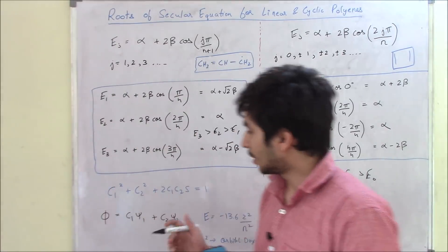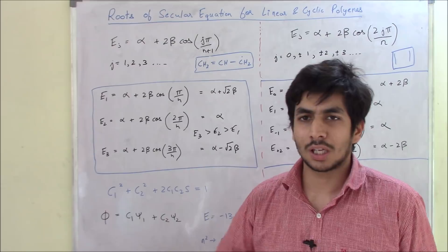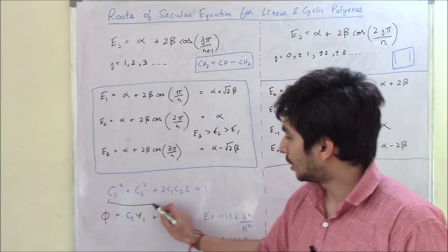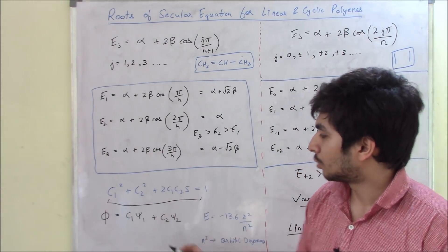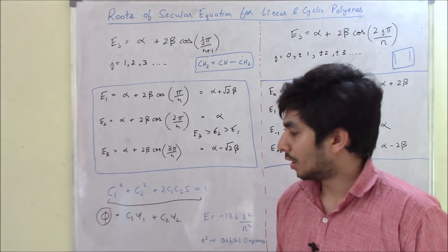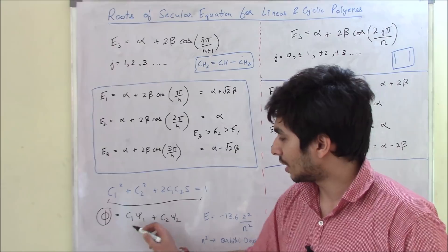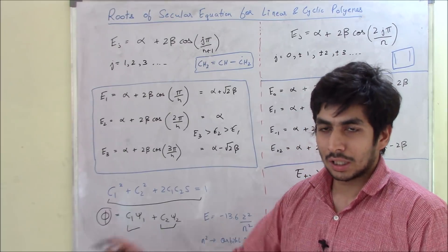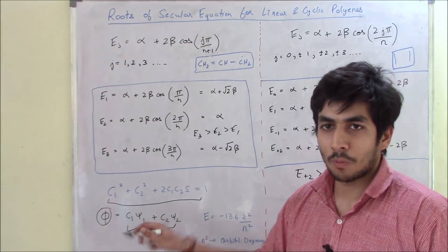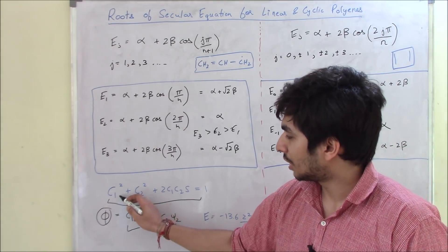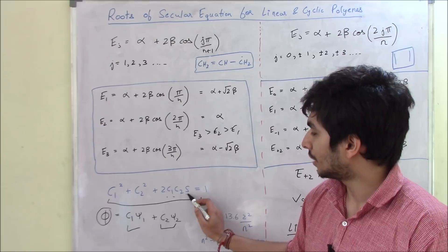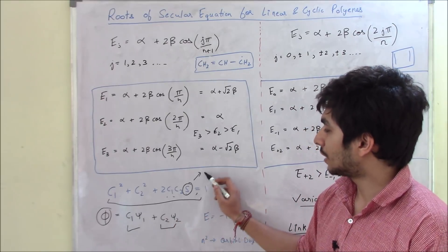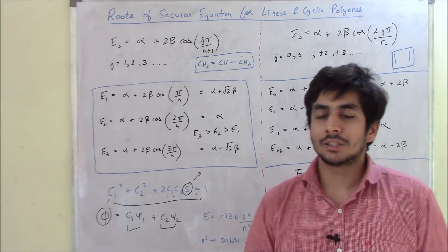Some other formulas to discuss: the overlap integral, which was asked in GATE 2018. The formula is c1² + c2² + 2·c1·c2·S = 1. If a wave function is given as a linear combination c1·ψ1 + c2·ψ2 and the wave function is normalized, you can use this formula. Since c1 and c2 will be known, you can solve for S, the overlap integral.